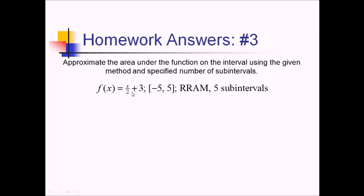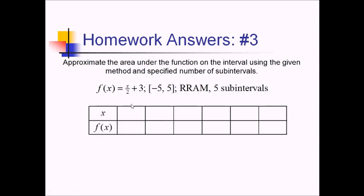For this problem, we're trying to approximate x over 2 plus 3 from negative 5 to 5 using RRAM with 5 subintervals. Since I'm doing 5 subintervals over this distance of 10, I'm going to go by 2's. Setting up my table, I'll start at negative 5, and then I'll have negative 3, negative 1, 1, 3, and 5. I'm going to go with decimals. So we've got negative 2.5 plus 3, which is 0.5. Then negative 1.5 plus 3, which is positive 1.5. Then negative 0.5 plus 3, that's 2.5. So we've got 0.5 plus 3 is 3.5. Then we've got 1.5 plus 3 is 4.5. And 2.5 plus 3 is 5.5.